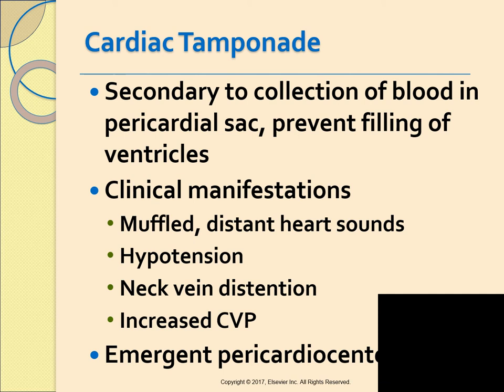Cardiac tamponade is when blood rapidly collects in the pericardial sac, compressing the heart. The pericardium doesn't stretch, so once compression occurs the ventricles can't fill. You'll hear muffled distant heart sounds, see hypotension, neck vein distension, and increased central venous pressure. This is a medical emergency requiring pericardiocentesis — going in with a needle to pull the blood out — followed by surgical repair. The heart has no room to function with all that blood surrounding it.